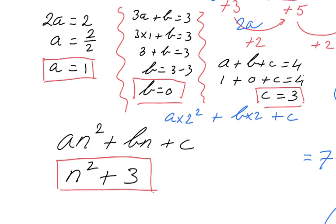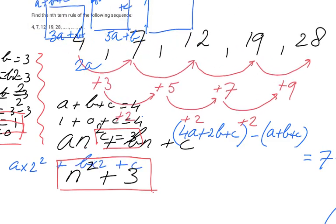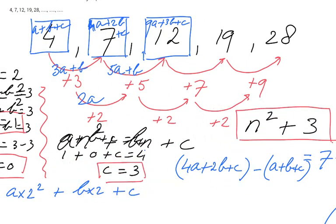Let's check: for n = 1, 1 squared plus 3 is 4 — fantastic. For n = 2, 2 squared is 4 plus 3 is 7 — very good. For n = 3, 3 squared is 9 plus 3 is 12 — very good. For the fifth term: 5 squared is 25 plus 3 is 28 — fantastic. That's the nth term rule for a sequence which does not have a constant term-to-term rule. I hope that was useful. Check my site ExplainingMaths.com for more resources. Bye bye.